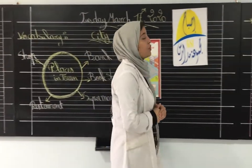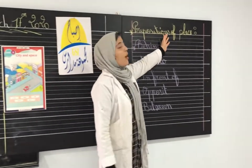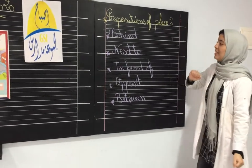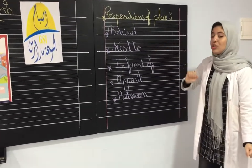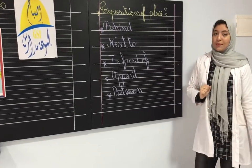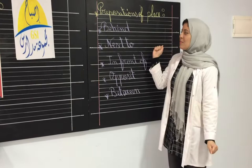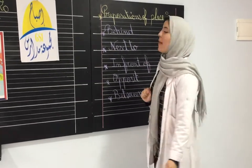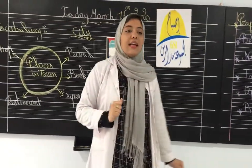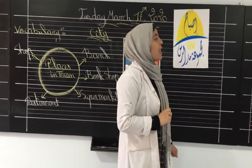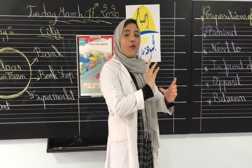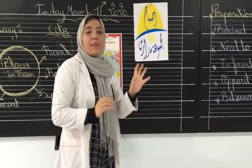Now let's move to prepositions of place. As you can see here, the prepositions of place — we have: behind, next to, in front of, opposite, and between. What does this mean? Prepositions of place allow us to know the position of a unique place.